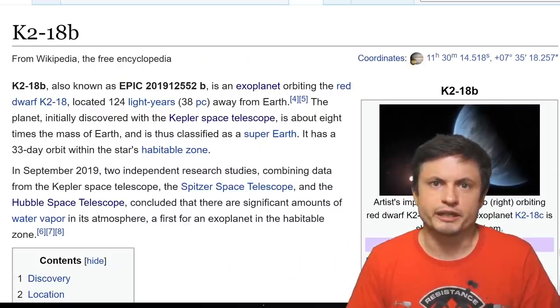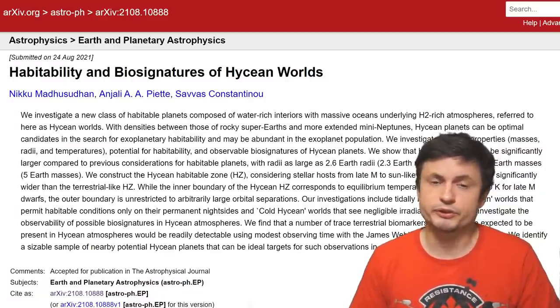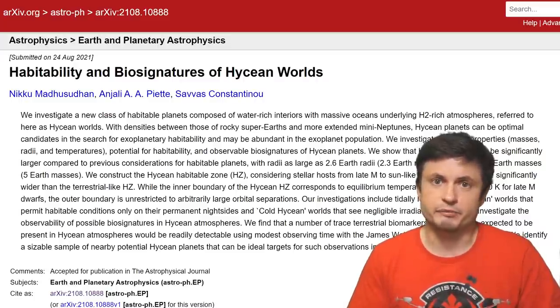With one in particular already showing signs of potential habitability - the exoplanet located about 124 light years away from us known as K2-18b, an object that we've discussed on the channel previously. The planet where water vapor has already been discovered in the atmosphere, that also happens to be in the habitable zone of the star system, and that might potentially represent the prototype for these types of exoplanets, the hycean planets. Planets that seem to be habitable but represent something completely different from planet Earth. That is pretty much the focus of the paper that you can find in the description below.